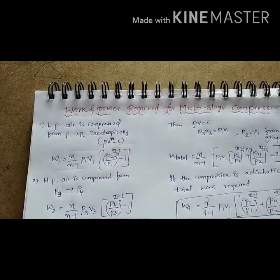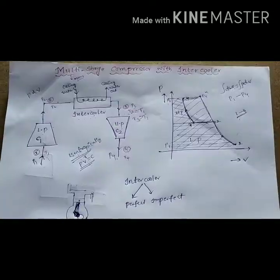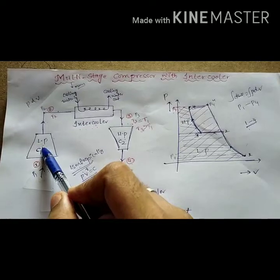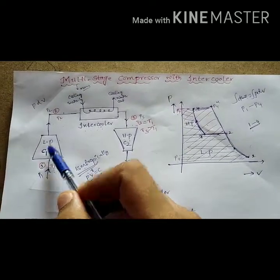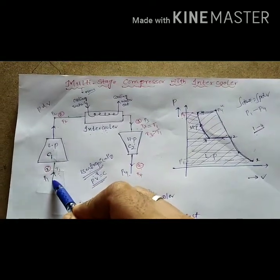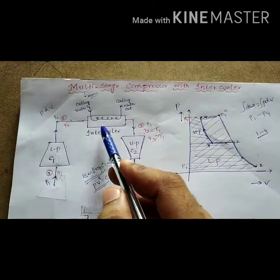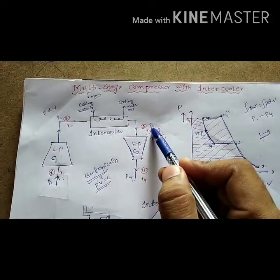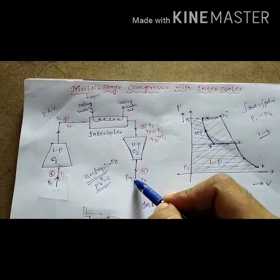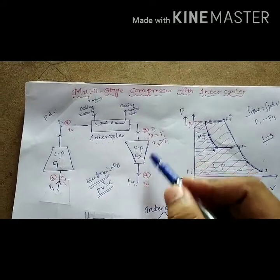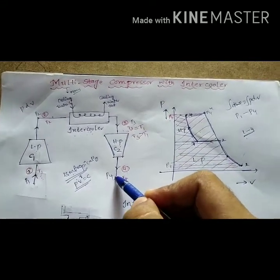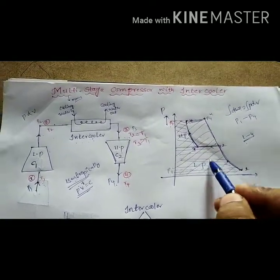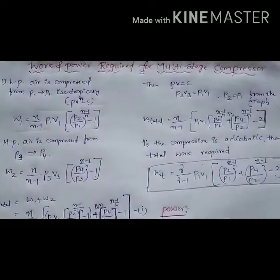Let us go back to the previous diagram. This is the low pressure compressor. From the low pressure compressor, the pressure is increasing from P1 to P2 using an intercooler. In the high pressure compressor, compression takes place from P3 to P4, and volume from V3 to V4. Now we are going to find the work done in the low pressure compressor and also the work done in the high pressure compressor.